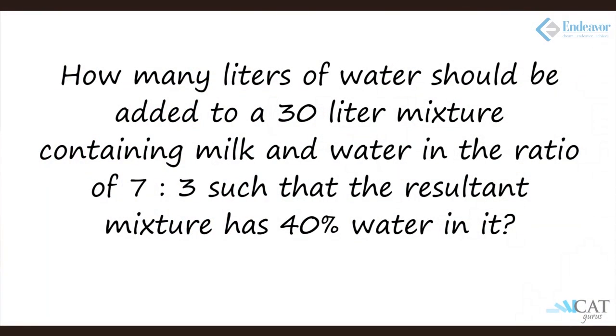The third type of question in allegation and mixture is when you already have a mixture and you need to add a pure unit to it. For example, we have 30 liters of milk and water mixture where milk and water is in the ratio 7 is to 3, meaning water is 30 percent of the mixture. We need to add pure water so that the final mixture has 40 percent water.